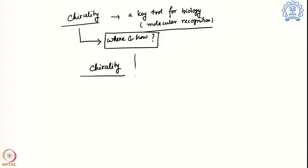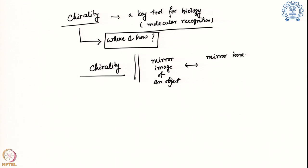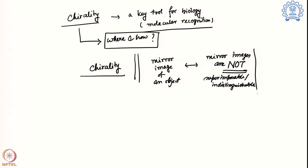When we say chirality, by definition it is a mirror image of a particular object such that the mirror images are not superimposable and indistinguishable. From a symmetric point group analysis, the molecule cannot have any particular Sn axis, which means the molecule should belong to the Cn or Dn point group — n can also be one for the case of Cn.